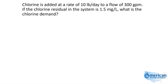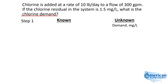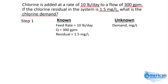Here they're having us calculate using our pounds-per-day formula and the demand formula as well. So let's write down this information — we're looking for the chlorine demand. They told us that our chlorine was dosing at 10 pounds per day, feeding into 300 gallons per minute, at a 1.5 milligram per liter residual. We know that the demand is equal to the dose minus the residual.